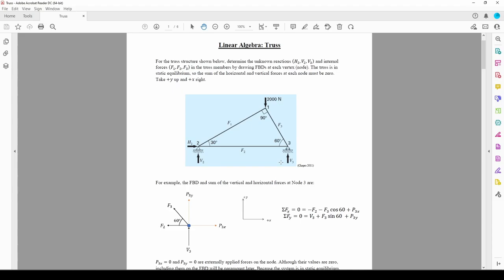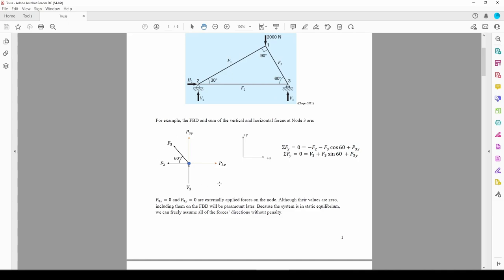To do so, we need to draw a free body diagram of each node. We're given the free body diagram of node 3. We can see that it includes the V3 reaction force and the two internal truss forces, F2 and F3. The free body diagram also includes two externally applied forces, P3X and P3Y. If we go back to the picture, node 3 doesn't have any externally applied forces, so the values of P3X and P3Y are zero. I included them on the free body diagram anyways, because they're going to be important later.